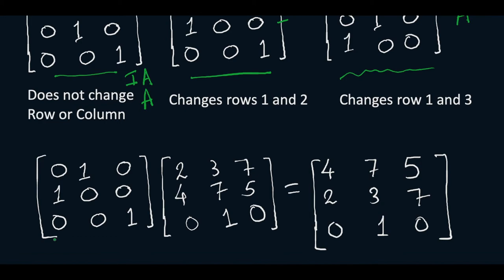Now take this example. When you multiply this permutation matrix to the matrix A, the rows of A will get changed. Now this becomes A1 and this becomes A2. You can see it has went here and it went to this side.